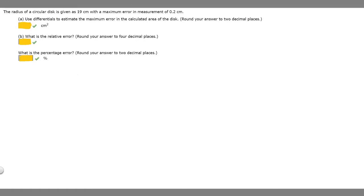In this problem, the radius of a circular disc is given as 19 centimeters with a maximum error in measurement of 0.2 centimeters. Part A says use differentials to estimate the maximum error in the calculated area of the disc.